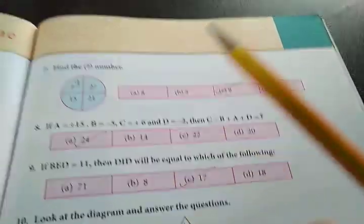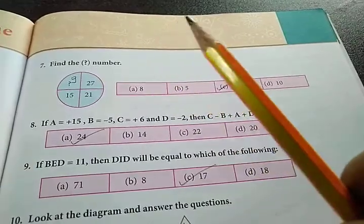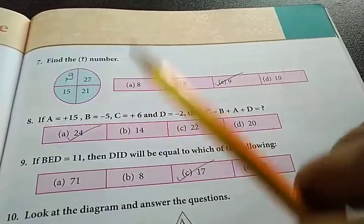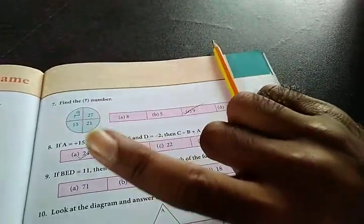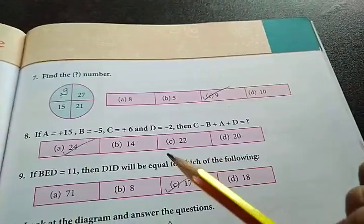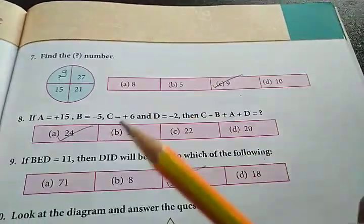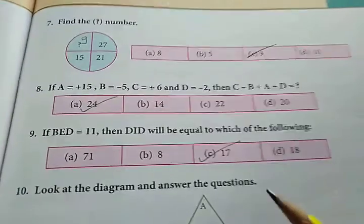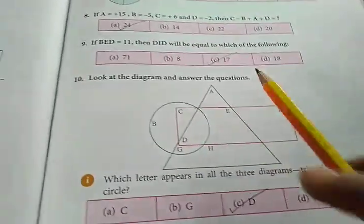In the same way, D, I, D means 4 - D is on number 4, 4 plus 9 - I is, if you count, a, b, c, d, e, f, g, h, i - that's 9. D is on number 4 and I is on number 9, so the addition will be 4 plus 9 plus 4. Answer will be 17, meaning option C is the correct answer.